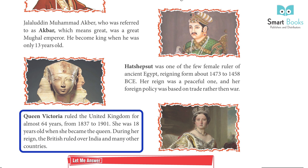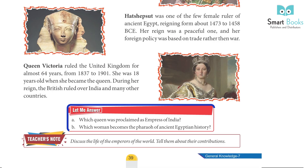4. Queen Victoria ruled the United Kingdom for almost 64 years, from 1837 to 1901. She was 18 years old when she became queen. During her reign, the British ruled over India and many other countries.